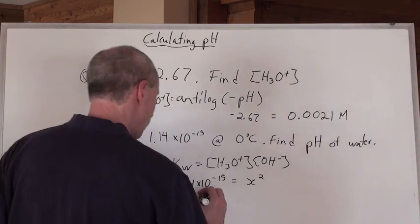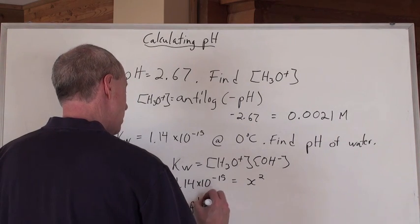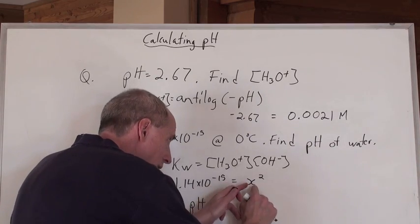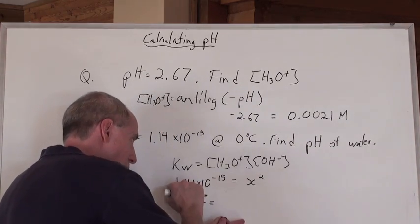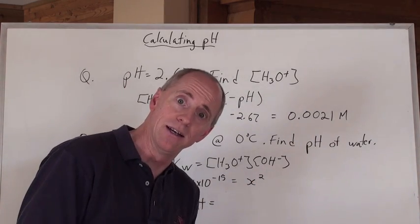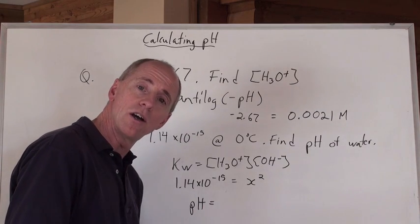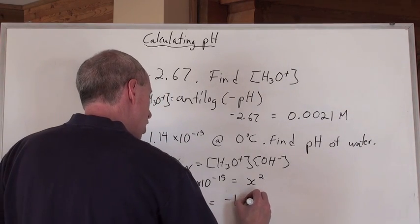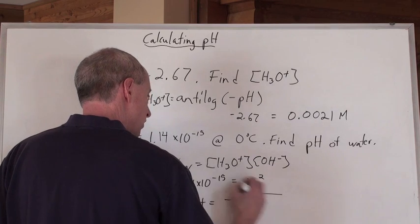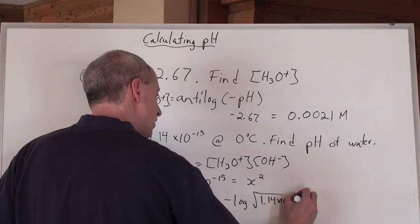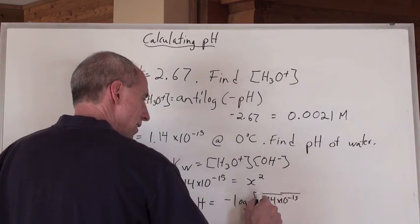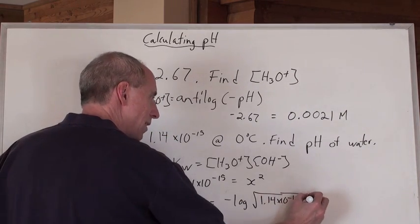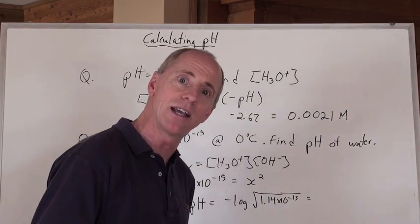So look, if you wanted to calculate the pH, you're going to take the, if you want the hydronium here, you take the square root of that number, that equals x, right? And so x is the hydronium ion concentration. And so, if we take the negative log of the square root of this number, 1.14 times 10 to the negative 15, that's going to be the square root of that is the hydronium ion concentration, negative log is the pH, and you know what you get when you punch that into your calculator?